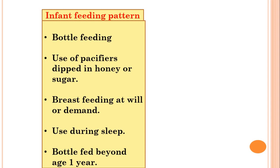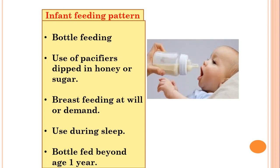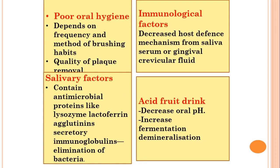Regarding infant feeding patterns — how they may predispose to early childhood caries: bottle feeding, use of pacifiers dipped in honey or sugar may pacify the child easily but with greater consequences. Breastfeeding at will or on demand, used during sleep, and bottle feeding beyond one year of age are also risk factors.